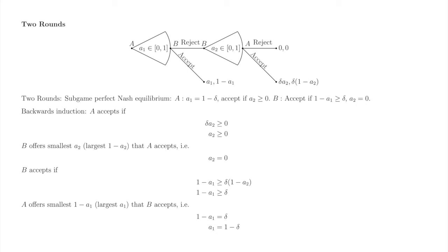Now B accepts if B's payoff from accepting, 1 minus A1, is at least as good as B's payoff from rejecting, delta times 1 minus A2. Since A2 is equal to 0, B accepts if 1 minus A1 is greater than or equal to delta. A makes B a minimally acceptable offer, which we represent by 1 minus A1 equal to delta. Rearranging, A1 equals 1 minus delta. We're at the top of the tree, so backwards induction is complete. The subgame perfect Nash equilibrium is that A plays A1 equals 1 minus delta and accepts if A2 is greater than or equal to 0. B plays: accept if 1 minus A1 is greater than or equal to delta, and offers A2 equals 0.